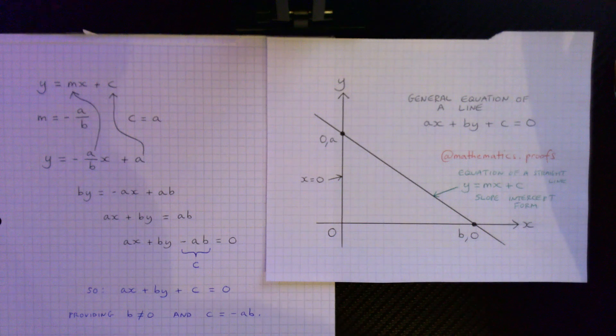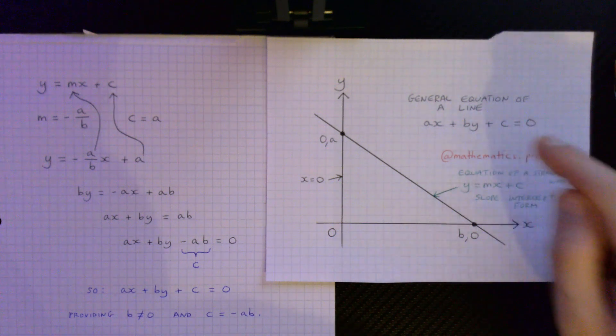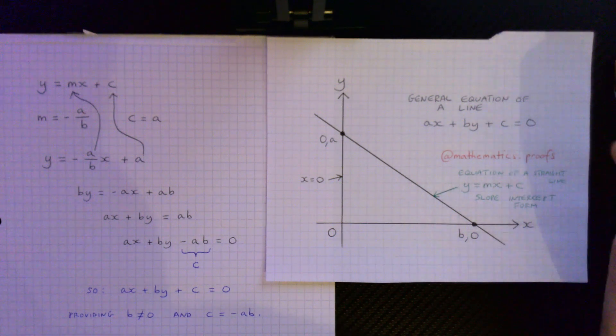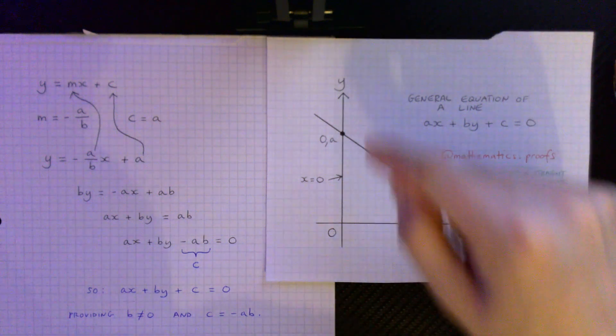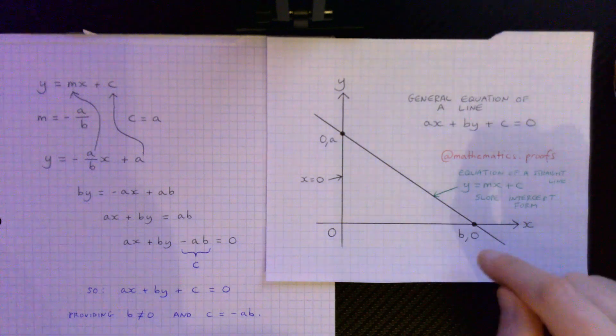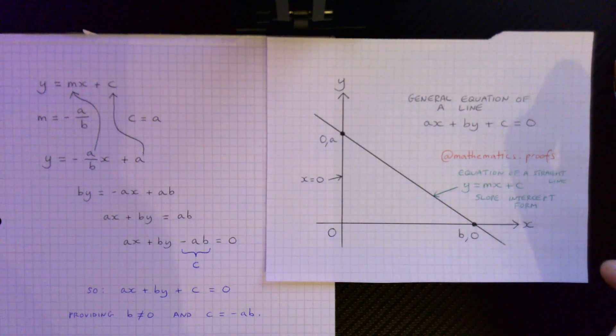Another important thing to note is that ax plus by plus c is equal to zero will go through the points zero a on the y axis and b zero on the x axis.